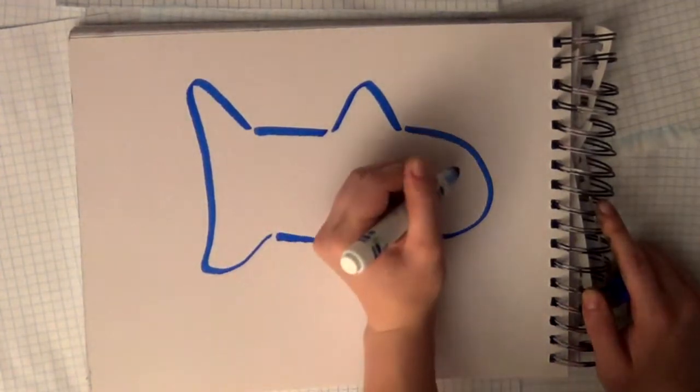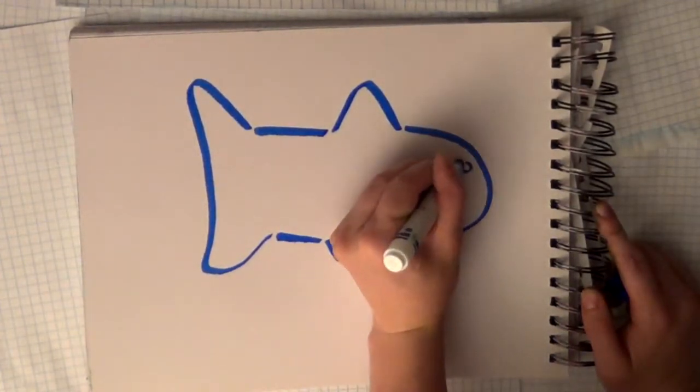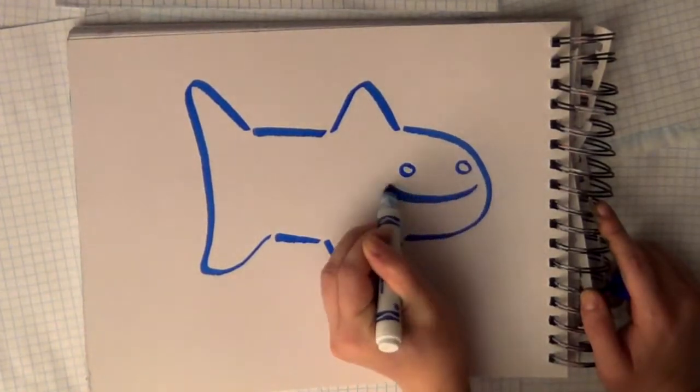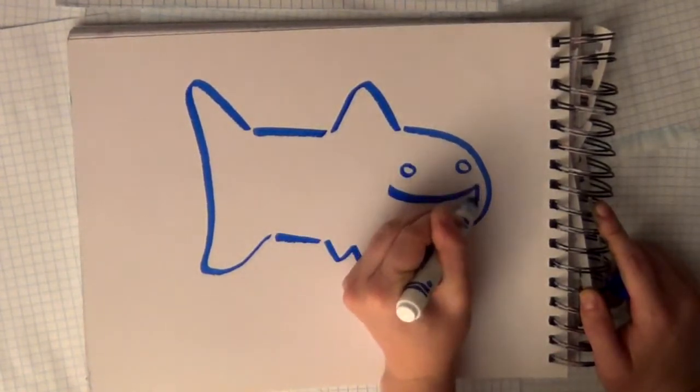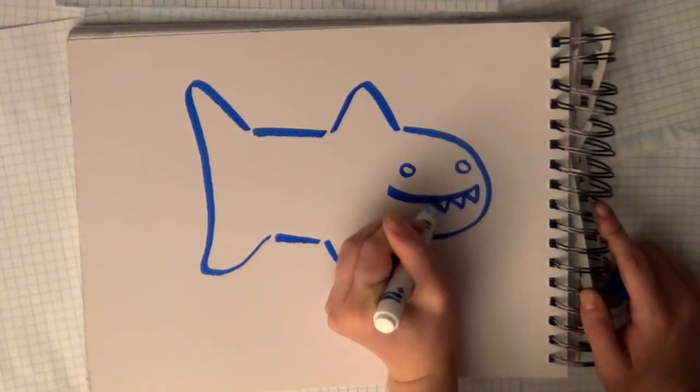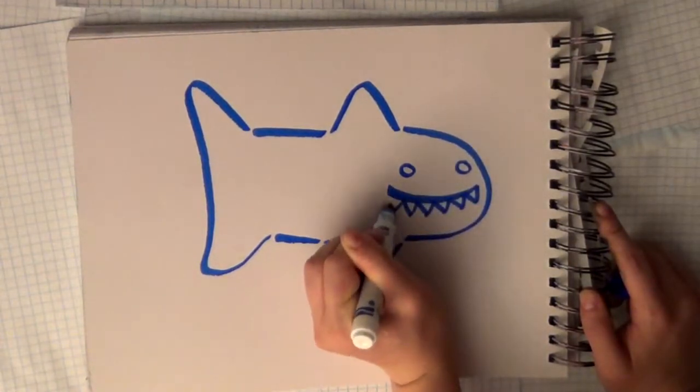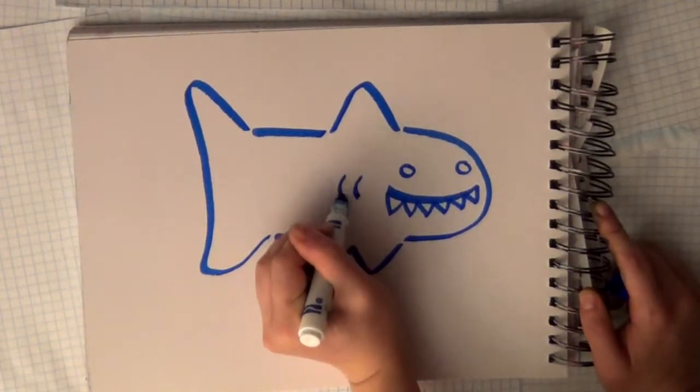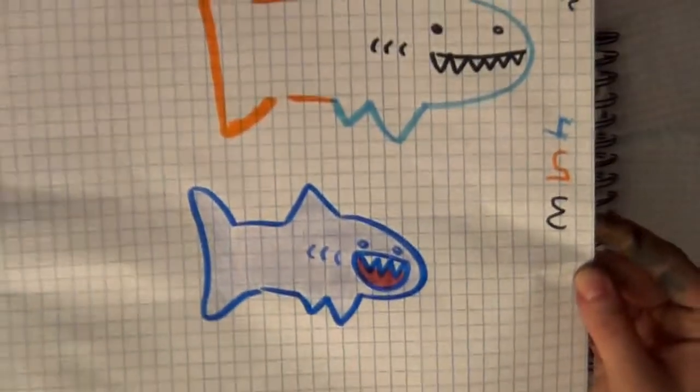The last step is that you have to draw a face on your shark. You can draw whatever face that you want to, but this shark has little sharp teeth and three gills. And that's how you draw a little baby shark.